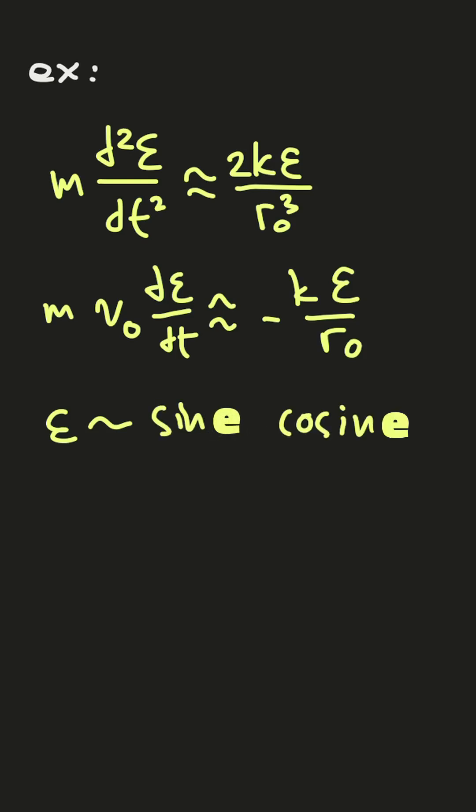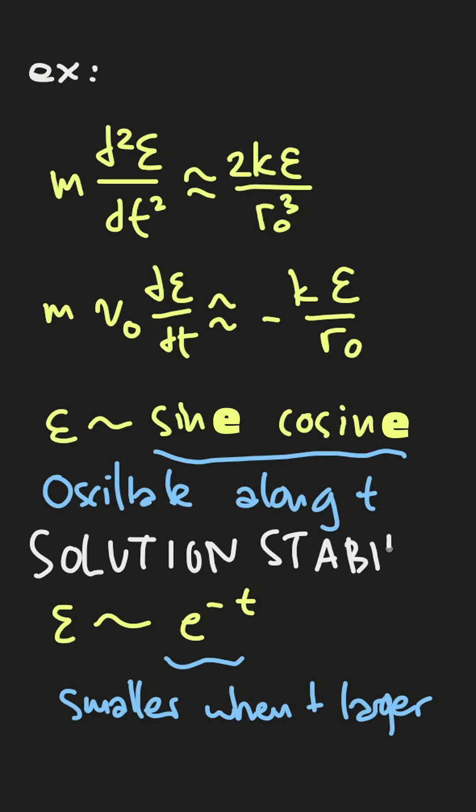sine or cosine here, and epsilon may be a power minus t here. And that's the method we call solution stability check.